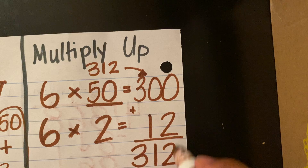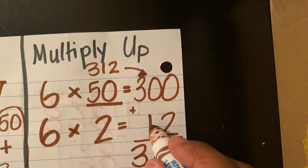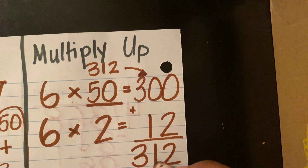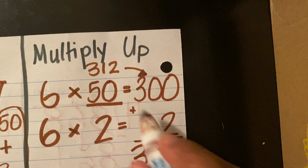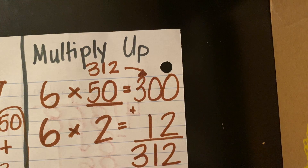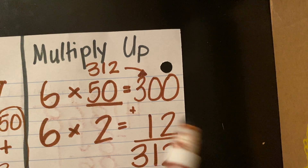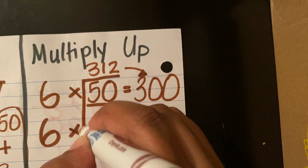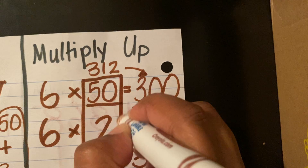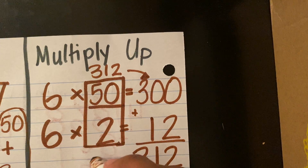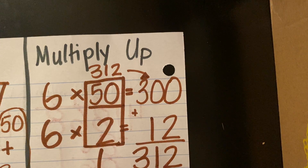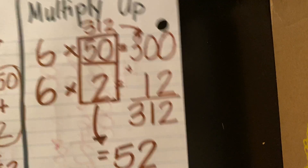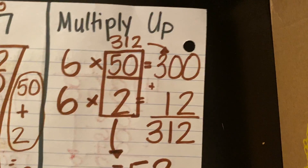Zero and two by itself is two, ten by itself is one, ten is ten, and then you have your three hundred, which gives three hundred and twelve. That means I am finished. To get my quotient, I simply add the numbers in the middle, which were my other factors. That tells me my quotient is 52, because 50 plus two is 52.